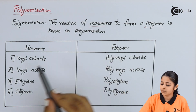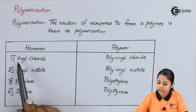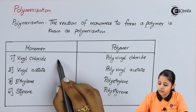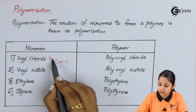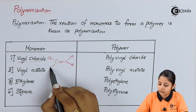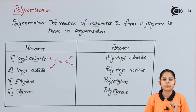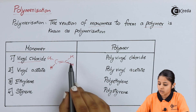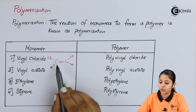In this table we have a list of monomers and polymers. The first monomer is vinyl chloride. The structure of vinyl chloride is C double bond C, where one carbon is attached to a Cl and a hydrogen, and the other carbon is attached to two hydrogens. Every carbon has a valency of 4, meaning each carbon can make 4 bonds. The first carbon makes its first two bonds with the second carbon, its third with chlorine, and its fourth with hydrogen.